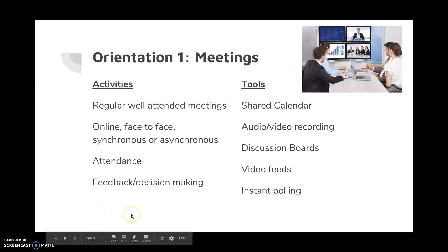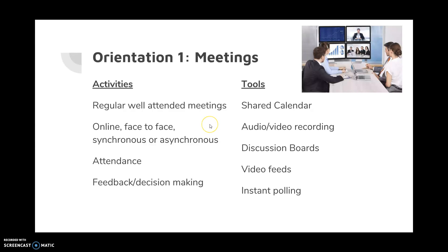If the focus of your community is on having meetings, you want to address activities like having regular well-attended meetings, receiving feedback, and how you're going to make your decisions at your meetings. The chapter gives examples of tools if your community focus is mostly on having meetings.